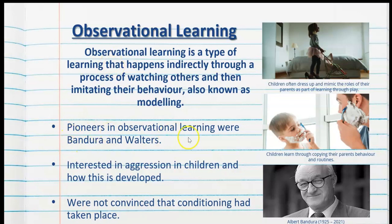The main pioneers in observational learning were Albert Bandura and Walters. They were particularly interested in aggression in children and how this developed. At this point, classical conditioning and operant conditioning were already well established in psychology by Watson, Pavlov and Skinner.